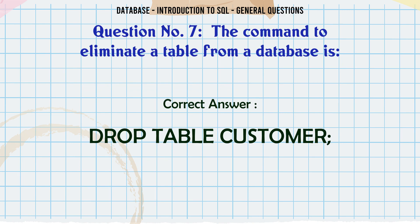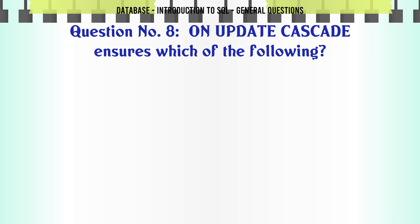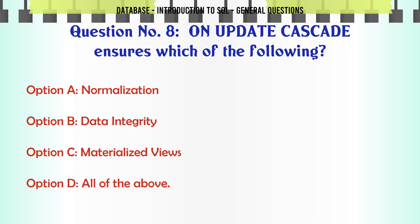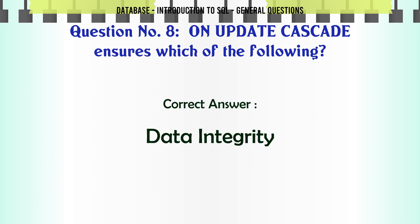On update cascade ensures which of the following? A. Normalization. B. Data integrity. C. Materialized views. D. All of the above. The correct answer is: data integrity.